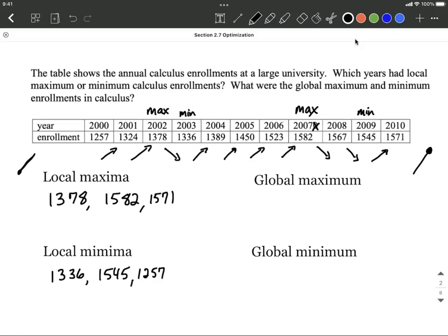Now, comparing these local maximas and minimas, we want to pick out the very highest and the very lowest. Our global maximum is going to be the very highest enrollment. So the very highest enrollment looks to be 1582, as I compare those three values. Now the very lowest enrollment appears to be 1257.